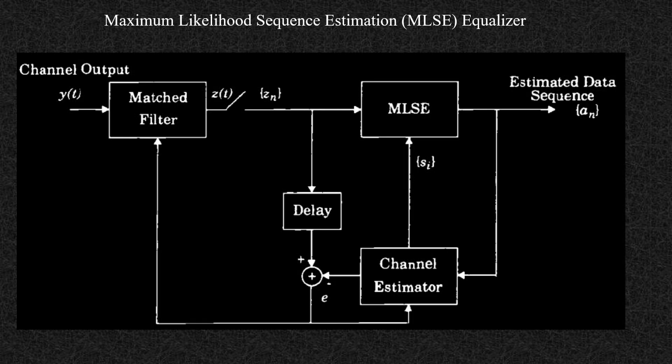The next one is the maximum likelihood sequence estimation — the MLSE equalizer. You have a channel output, then a tap. Feedback is given to the channel estimator. The channel estimator estimates the output and gives it to the adder. Whatever input or relay is provided, that output is given again to the channel estimator, which then passes it to the maximum likelihood symbol estimator. An estimated data sequence is taken out, so the best output is chosen for reception.